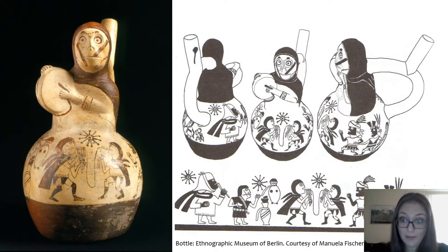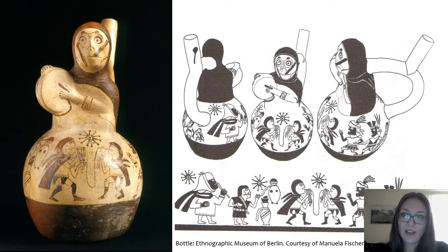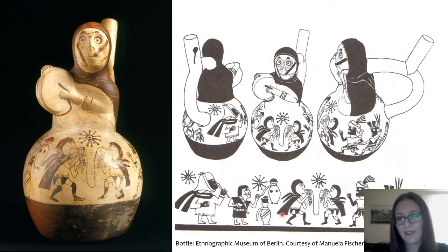This is an exception — it is the only underworld dance that is painted. This is a fantastic bottle in the Berlin Museum. It is painted, but you can see here the dead characters playing pan pipes with stars over their heads.